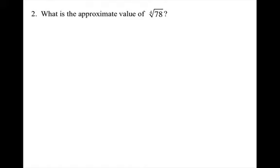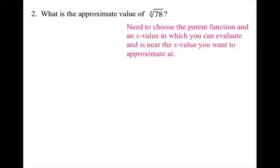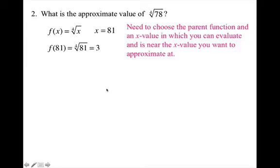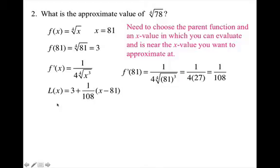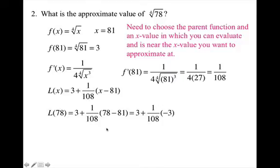Alright, let's say we want to approximate the value of the fourth root of 78. We need to choose a parent function and an x value that you can evaluate and is near the x value you want to approximate. So my parent function is the fourth root of x, and an x value I can take the fourth root of is 81 — so x equals 81. I find the value of my function at x equals 81, which is 3. I find my derivative, then the slope of the tangent line at x equals 81, which gives me 1 over 108. I write my equation of the tangent line and plug in the x value I'm approximating, which is 78, and simplify.